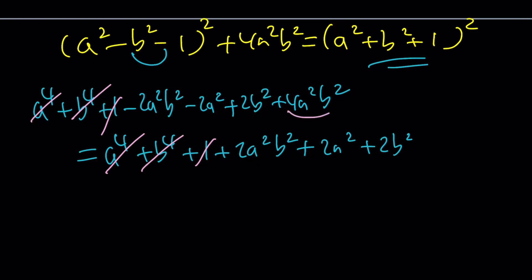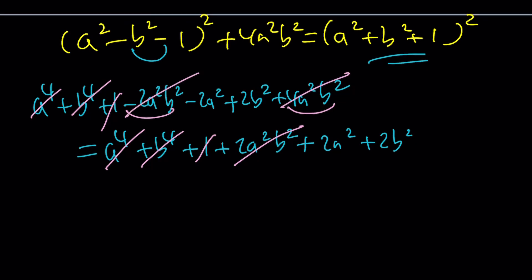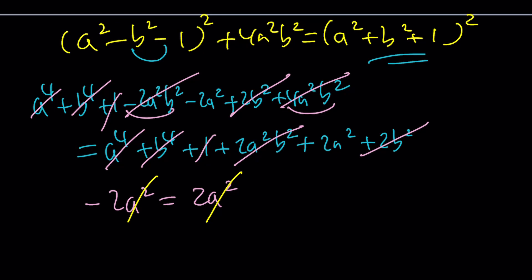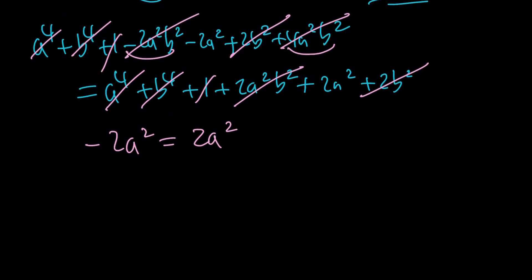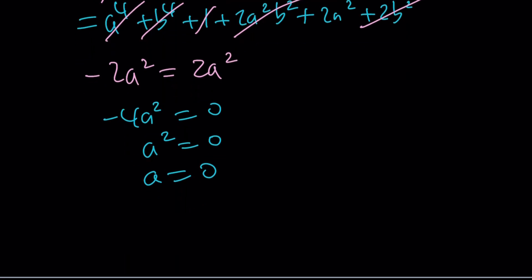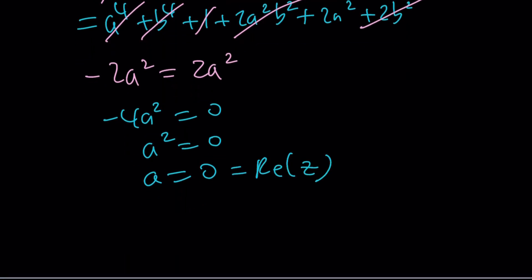After canceling like terms on both sides, 4a²b² − 2a²b² gives 2a²b² on the left. Everything cancels down to −2a² = 2a², which means −4a² = 0, so a² = 0, and therefore a = 0. This confirms the real part of z is zero, meaning z is either 0 or purely imaginary.